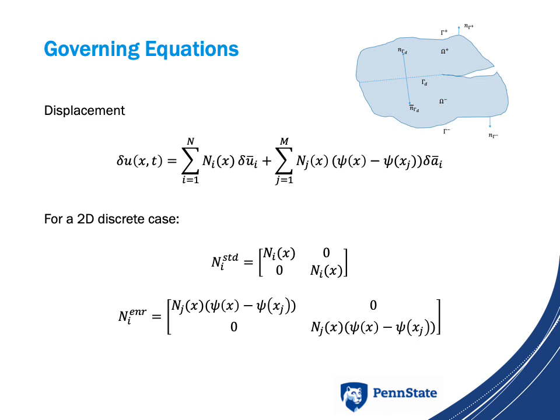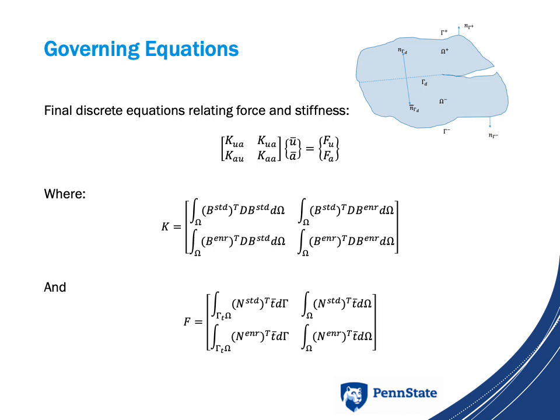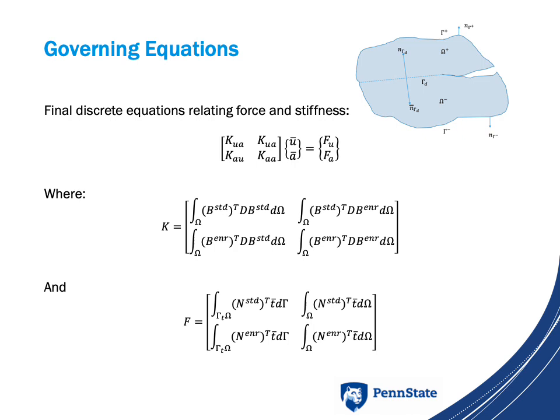We now see the equations for displacement in the 2D discrete case: a matrix for the standard displacements and a matrix for the enriched displacements. Same with strain — a matrix for the standard and a matrix for the enriched. We reach the final equations relating force and stiffness. Moving on, we will apply these to a hand calculation example for XFEM.